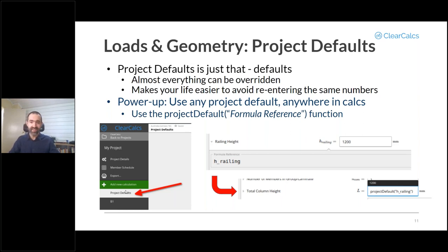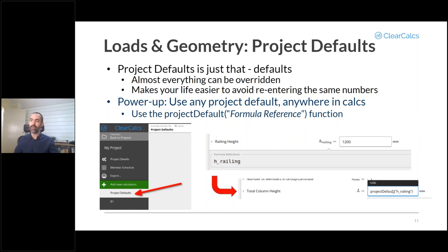For example, your joist spacing is likely to be the same throughout the entire building — why re-enter 600 millimeters on every single calculator? Enter it once in project defaults and that will be the default for any new calculator you create. There is also some advanced functionality: you can use just about any field in project defaults anywhere in ClearCalcs. For example, if you set a railing height — the formula reference is h_railing — and enter 1200 millimeters, any calculator you create can type 'project_default(h_railing)' to pull that value automatically.